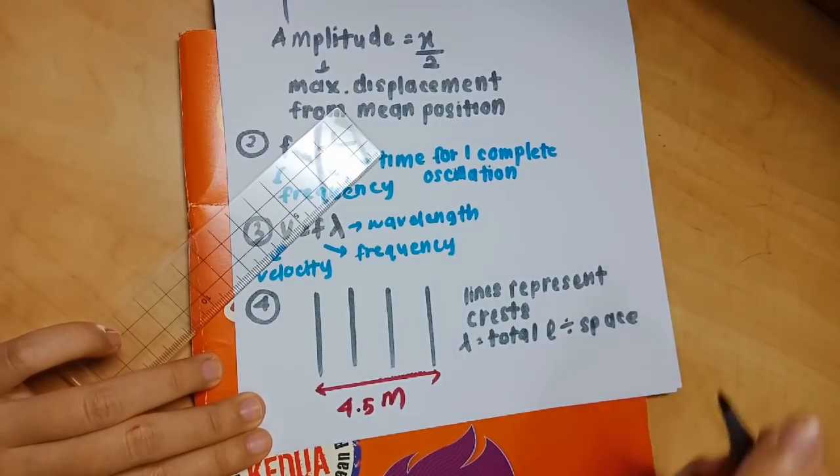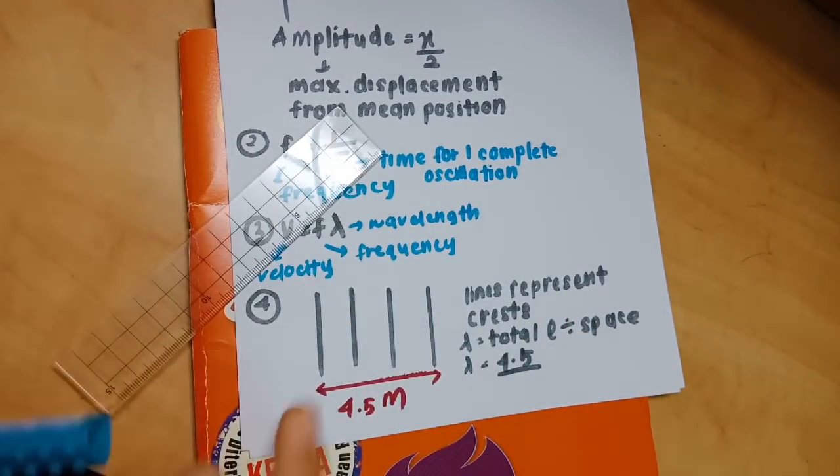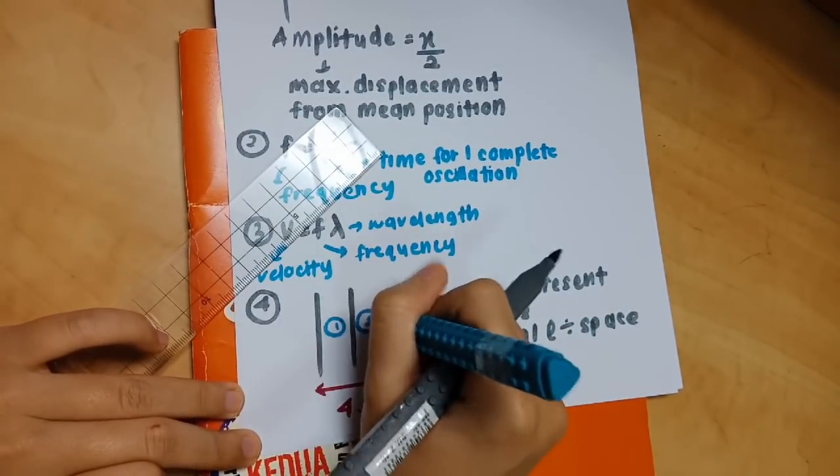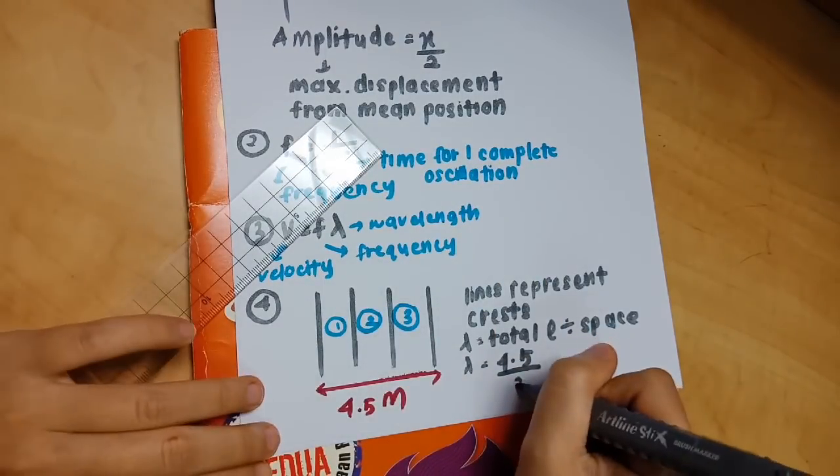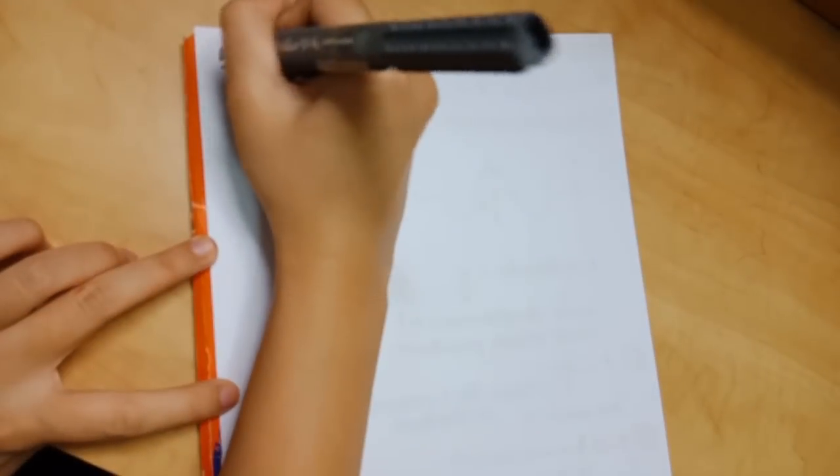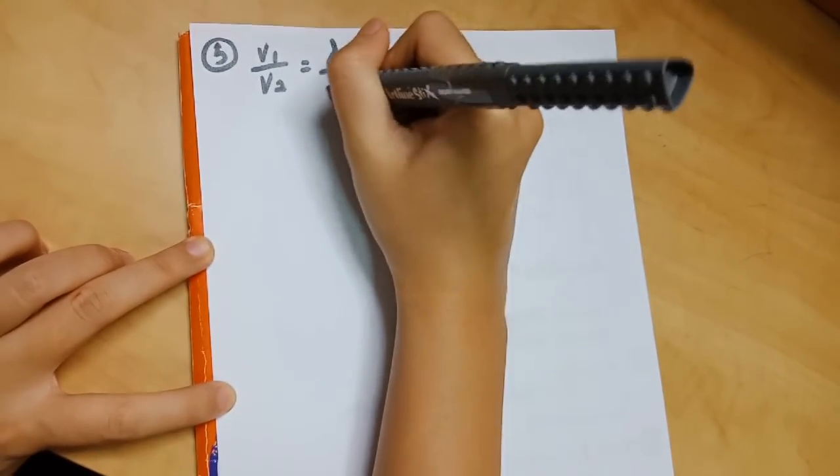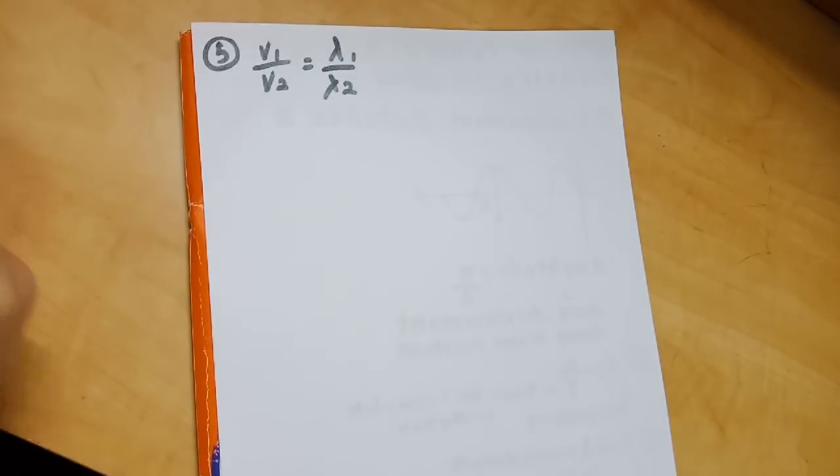As you can see, I numbered the space in between 1, 2, 3. So 4.5 divided by 3, and your lambda will be 1.5 meter.